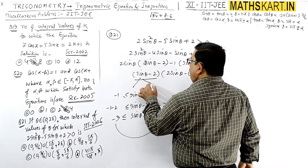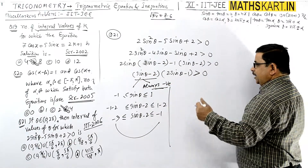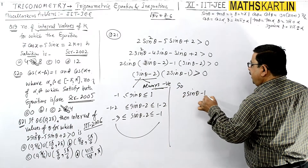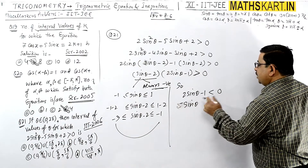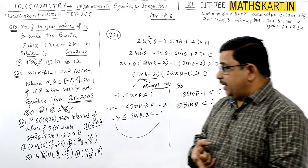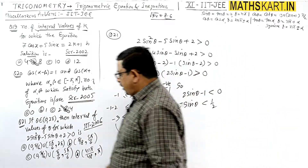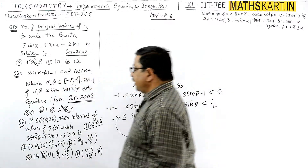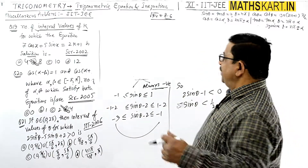Since (sinθ - 2) is always negative, dividing the inequality by this negative value flips the sign. So we get (2sinθ - 1) < 0, which means sinθ < 1/2. And the angle should lie between 0 to 2π.